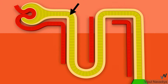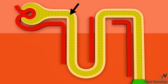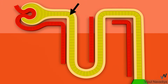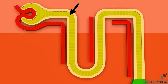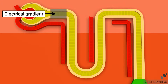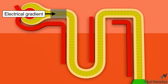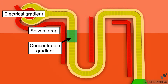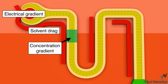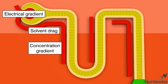In the proximal tubule, reabsorption occurs mainly by the paracellular route. There are three factors driving it: electrical gradient in the initial part, solvent drag throughout the proximal tubule, and concentration gradient at the later part.